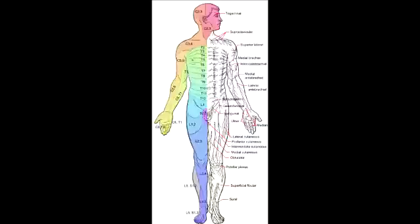What dermatome is supplied by thoracic spinal nerve 4? Thoracic spinal nerve 4 supplies the area at the nipple. What dermatome is supplied by thoracic spinal nerve 7? Thoracic spinal nerve 7 supplies the area of the xiphoid process.